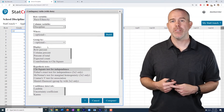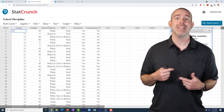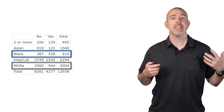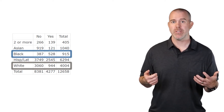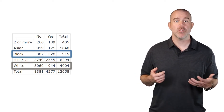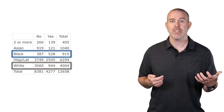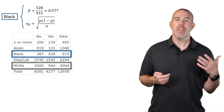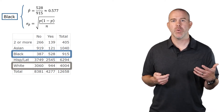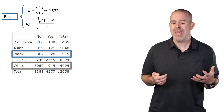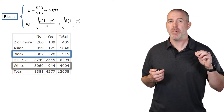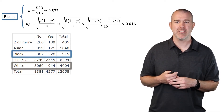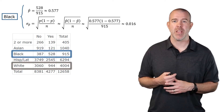Setting rows to race or ethnicity and columns to discipline gives us totals for black students and white students. We treat this as a random sample. For black students, the sample proportion is about 0.577. Since we don't know the true p, we approximate the standard deviation as the square root of p-hat times one minus p-hat all over n, giving about 0.016.